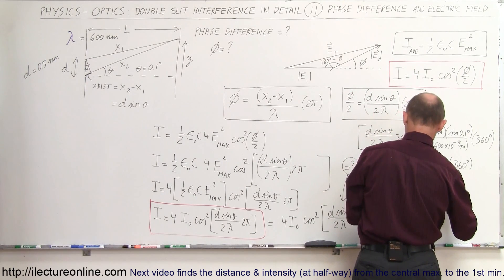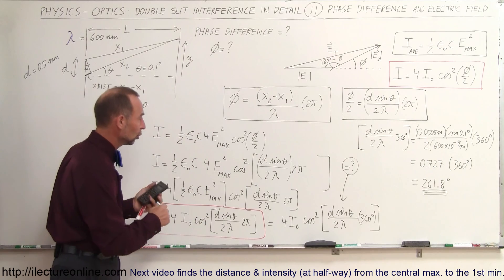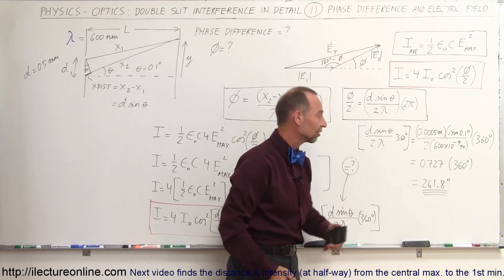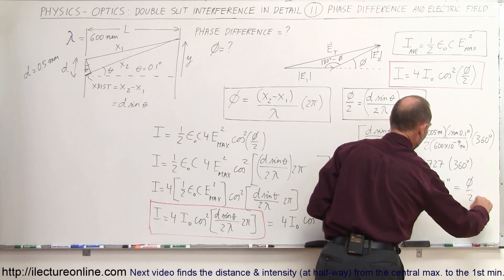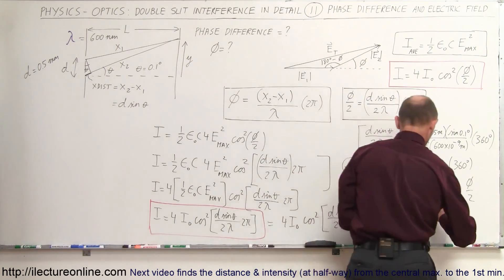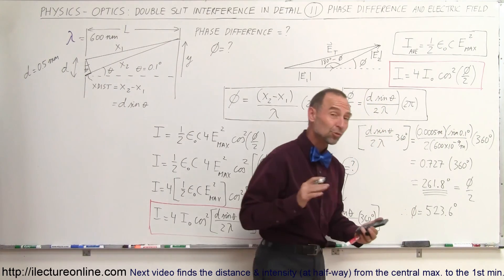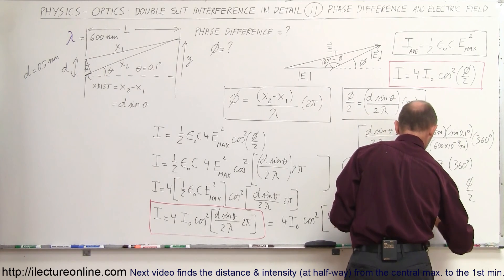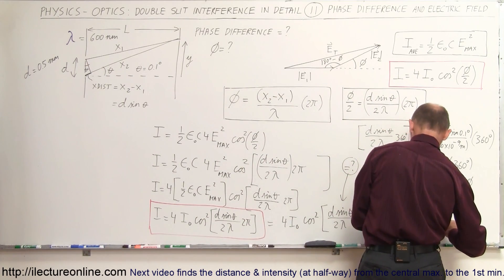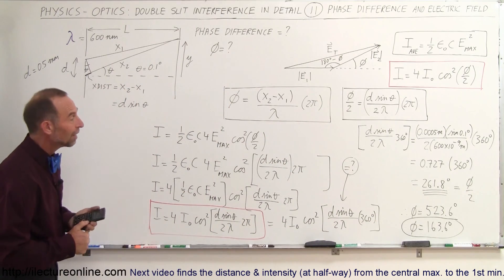Since this whole quantity inside the brackets represents the phase angle divided by 2, we have φ/2 = 261.8 degrees. Therefore the full phase angle φ = 2 × 261.8° = 523.6°. Subtracting 360° (one full cycle) gives a phase difference of 163.6 degrees between the two waves when they arrive at the screen.